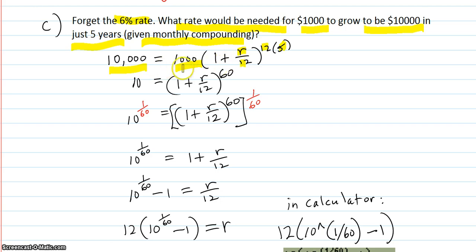So first thing we do is divide both sides by 1,000. 10,000 divided by 1,000 is 10. Then we also, at that same step, 12 times 5 is 60. So now we're here.